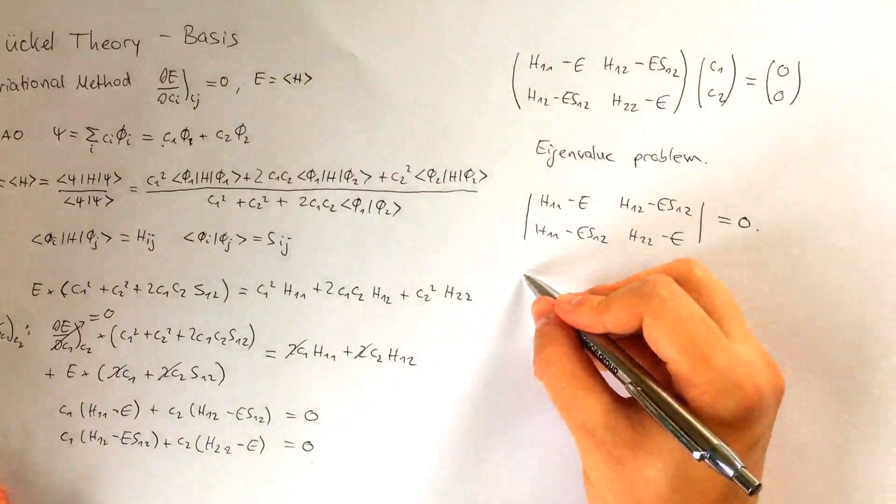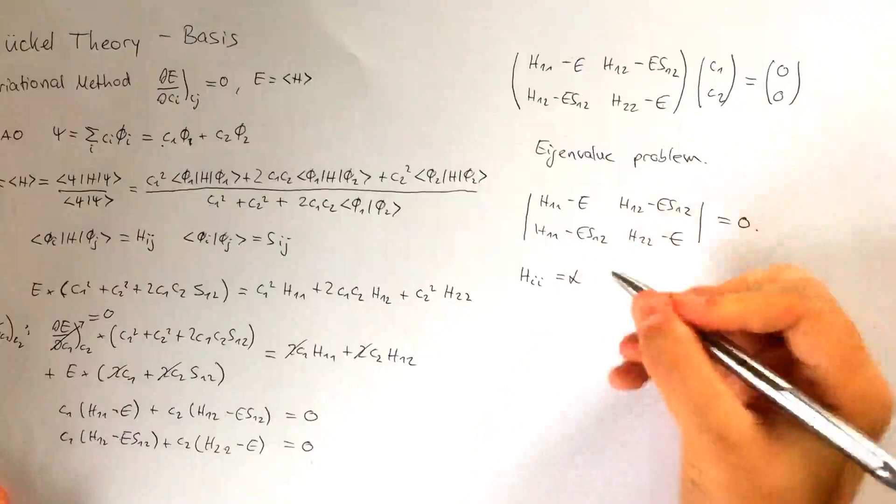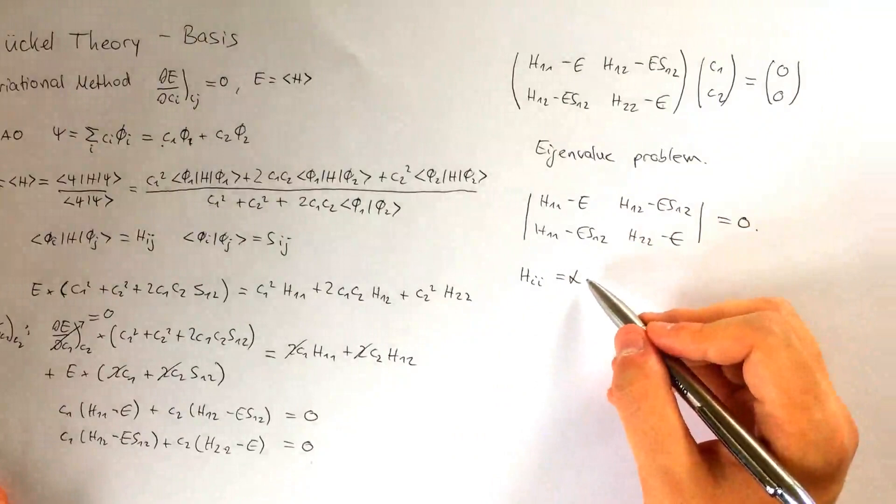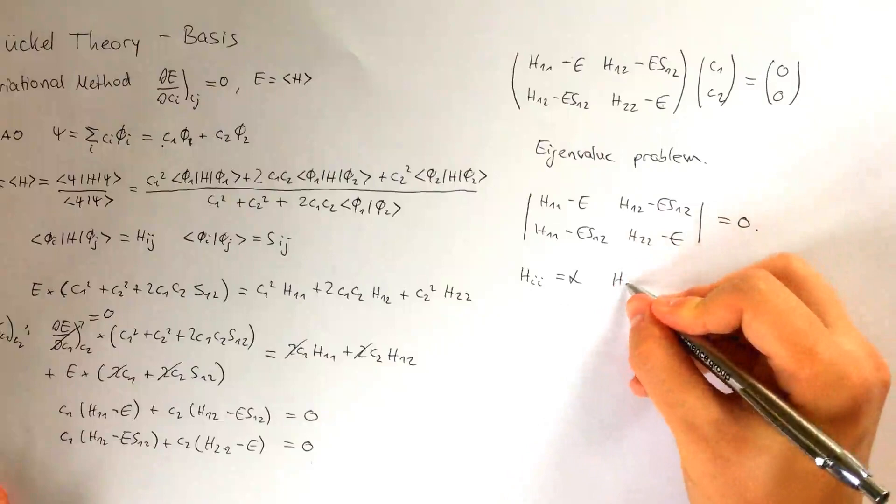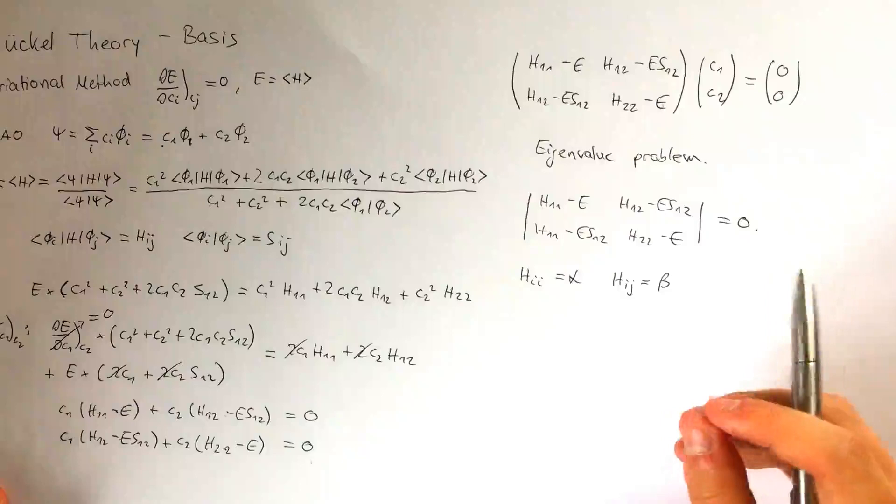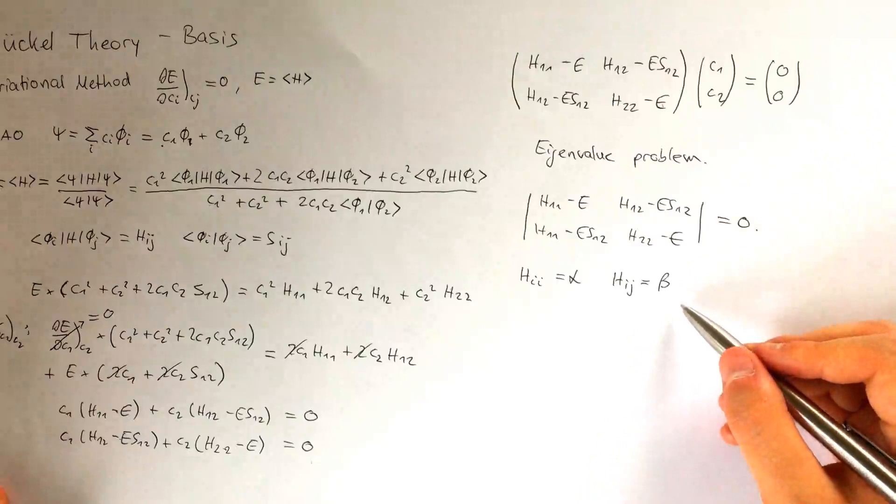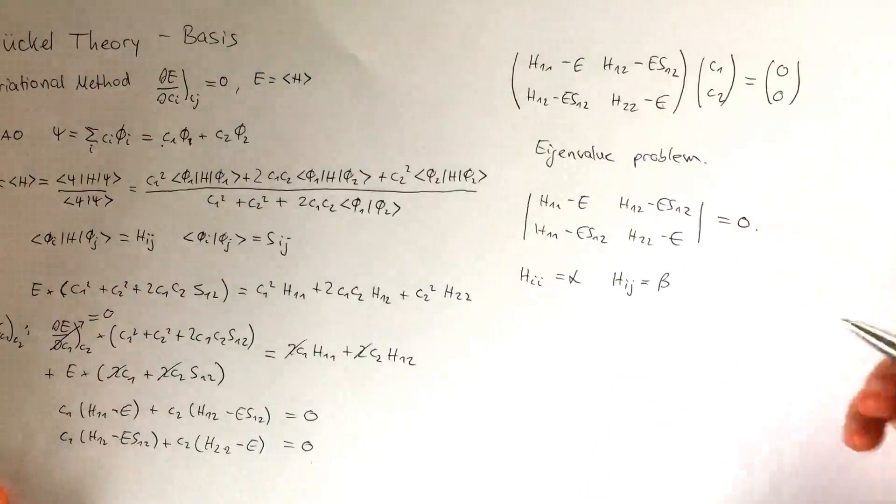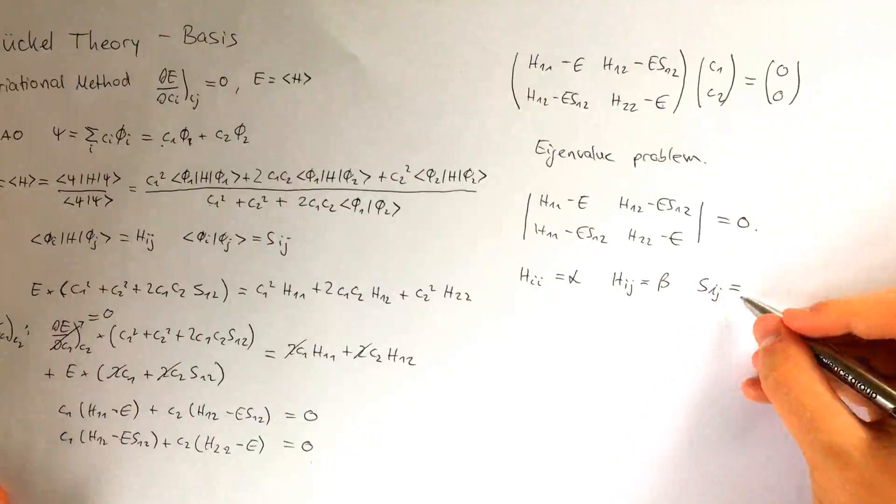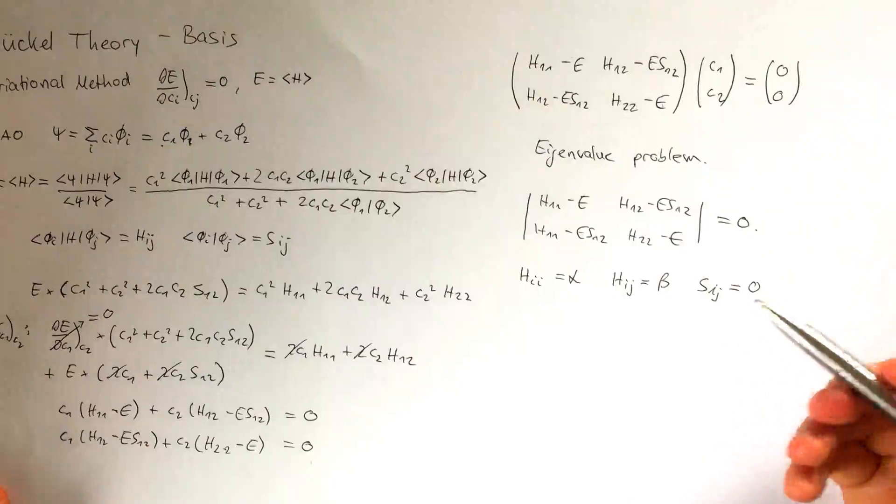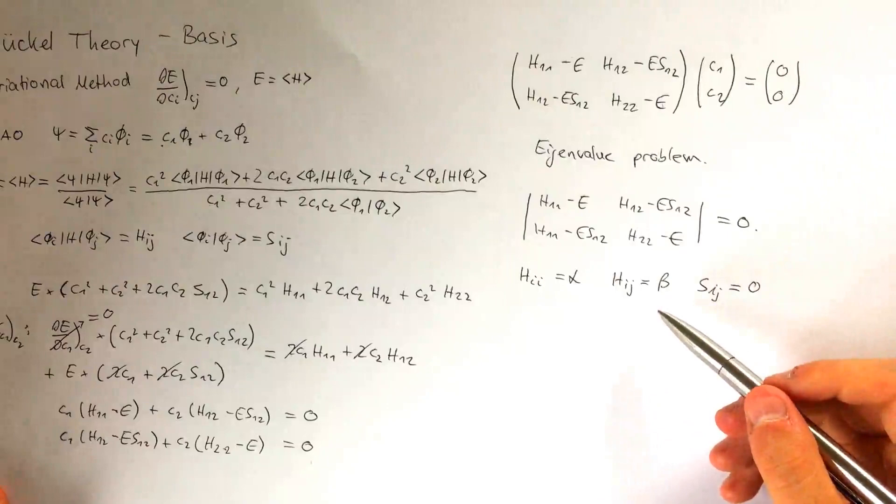In Hückel theory, we simplify the problem even more. We say that Hii is equal to alpha, which means alpha is just an indicator of the orbital energy, which usually is the p orbital on carbon. And we say that Hij is beta, which describes the interaction of two p orbitals. And here we say that only orbitals that are adjacent to one another interact. We also say that Sij is equal to zero. So we say that there's no overlap, which seems illogical, but it simplifies the maths. And since we're just aiming for a qualitative picture of the energy levels, this is not such a big problem.